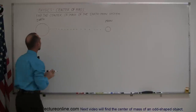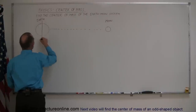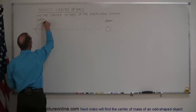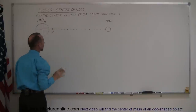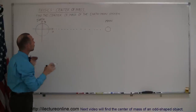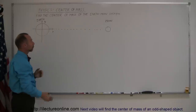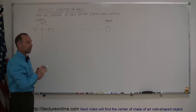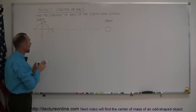Let's put them on a coordinate system, and to make things easy, let's put the origin right at the very center of the Earth. There's the Y-axis, there's the X-axis. You can right away see that since both the Moon and the Earth are on the X-axis, we don't have to worry about the Y-direction. So the center of mass in the Y-direction will simply be zero.